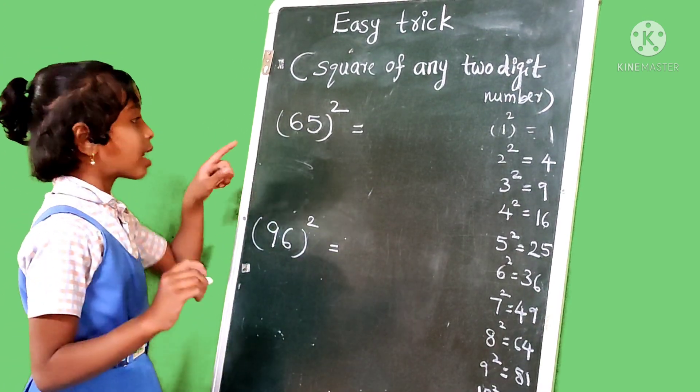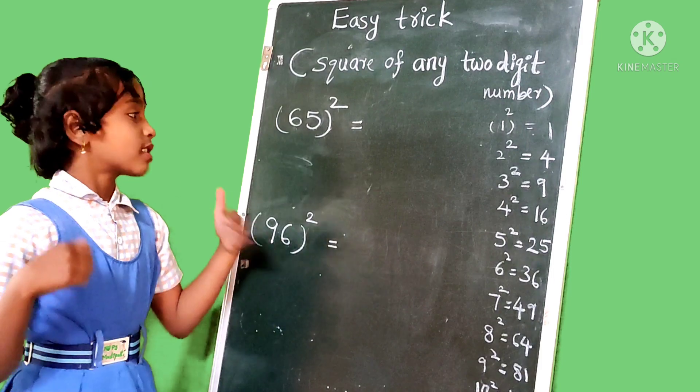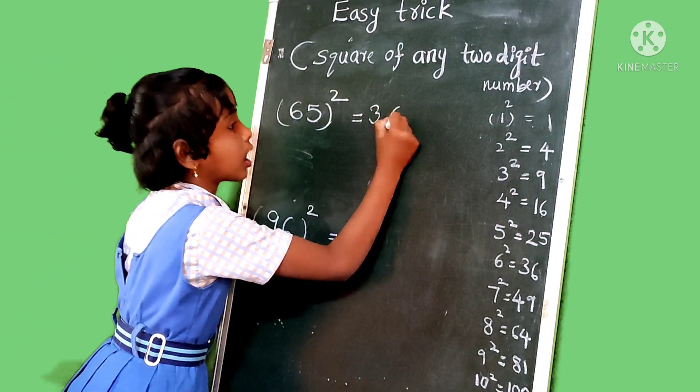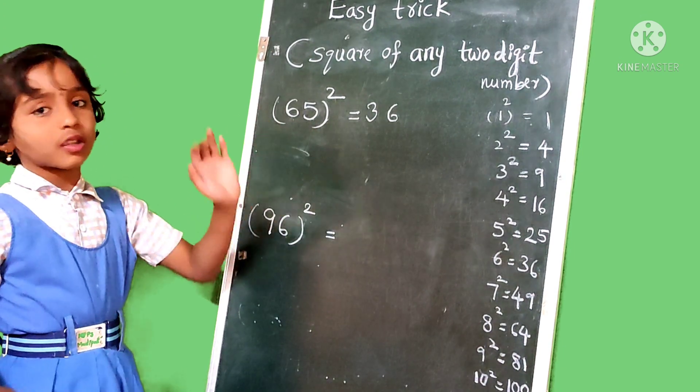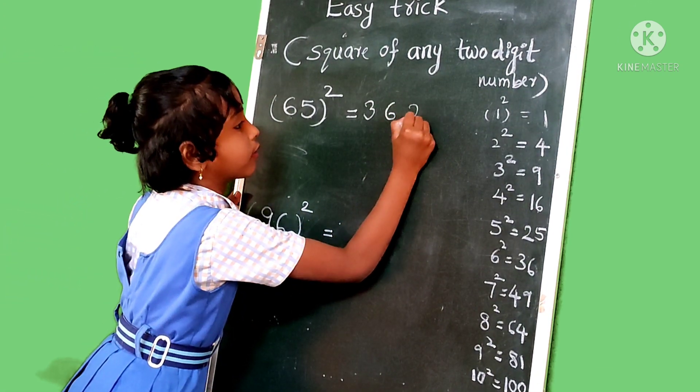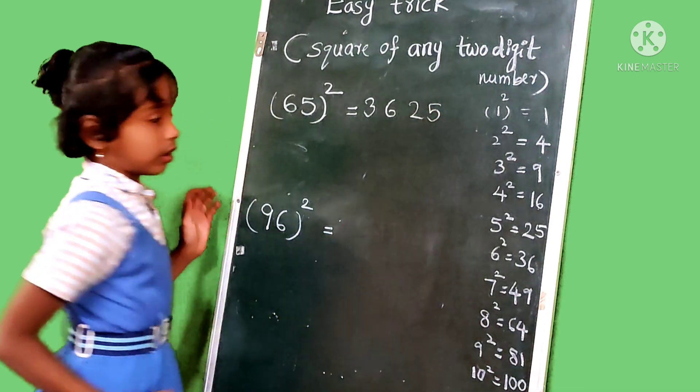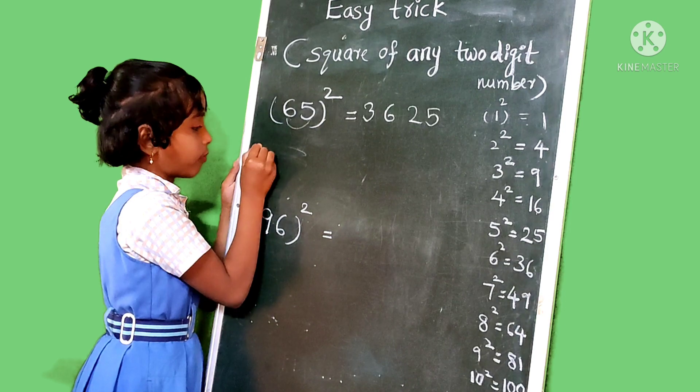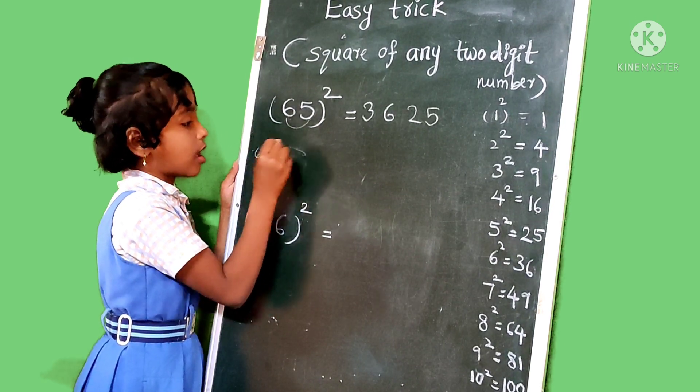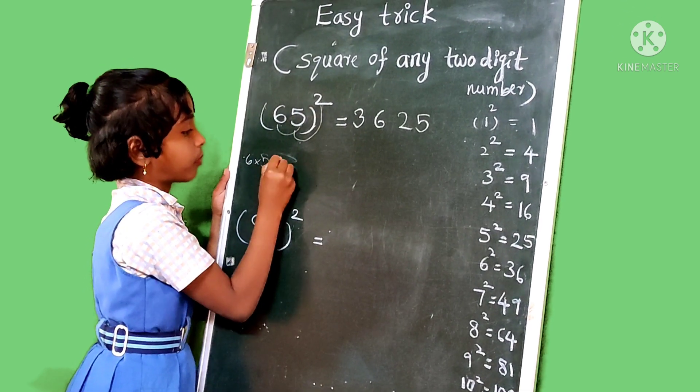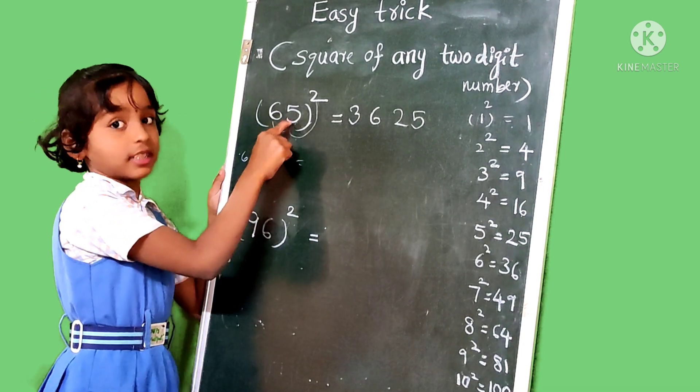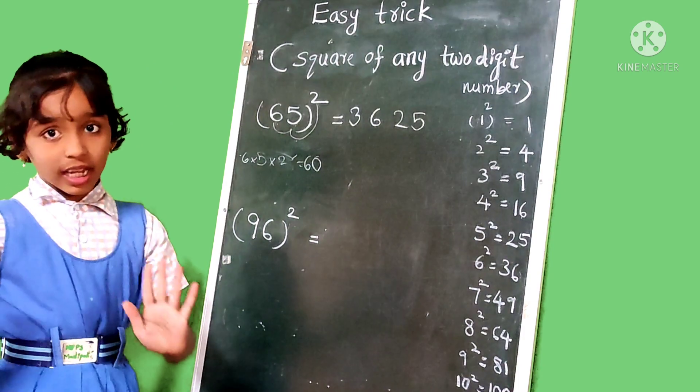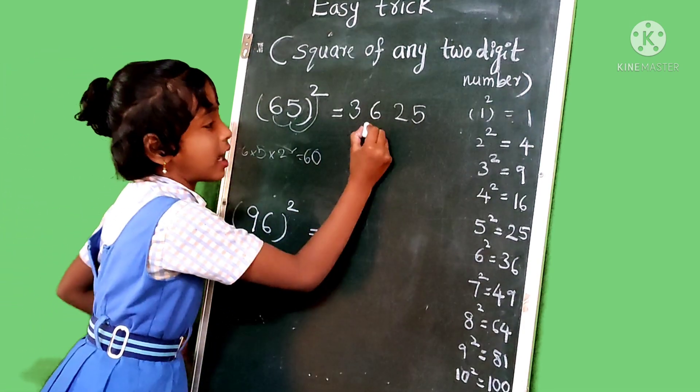Now another example, 65 squared. Then find out the 6 squared. 6 squared is 36. Then we write 36. And we find out the 5 squared. 5 squared is 25. Then next we multiply 6 and 5, 6 times 5, and 5 and 2, and 2. So 6 times 5 is 30, times 2 is 60. Then we leave unit place and write 60.